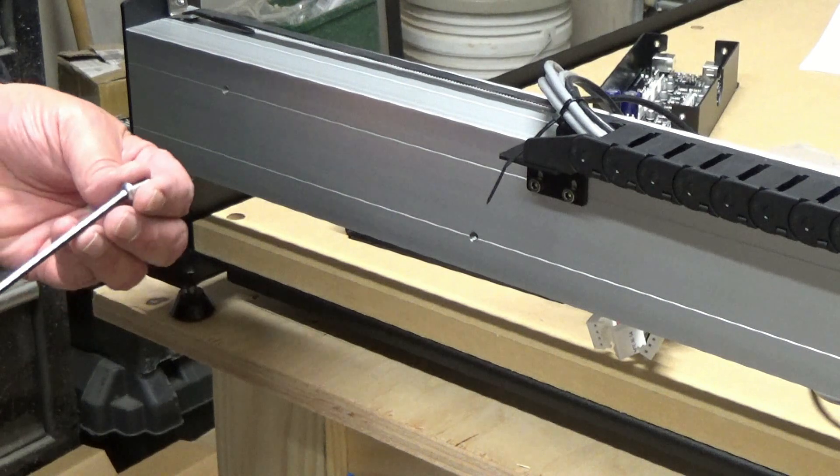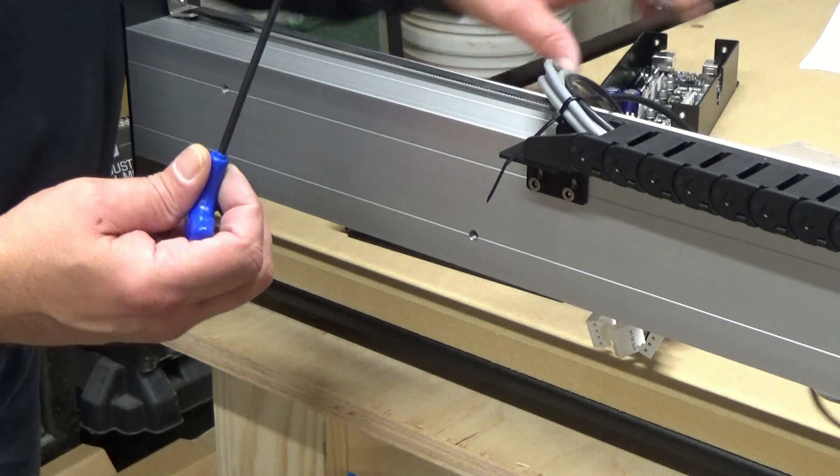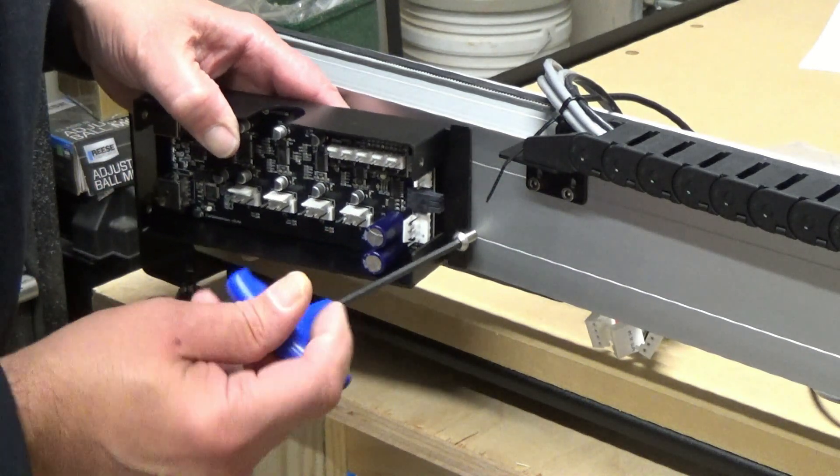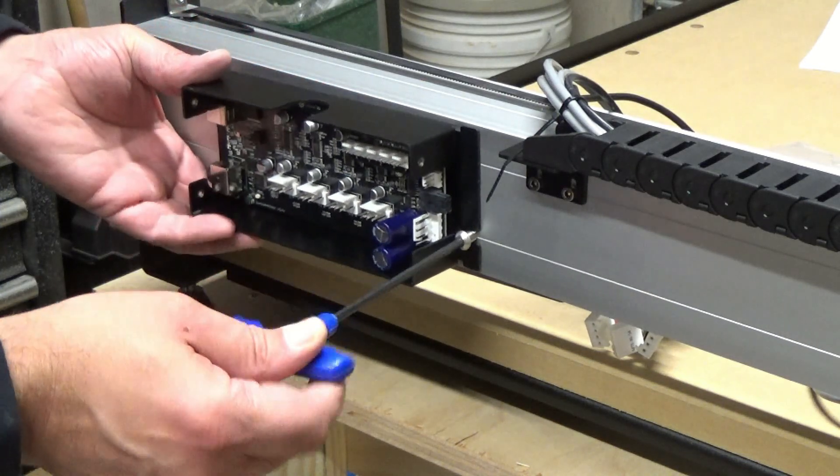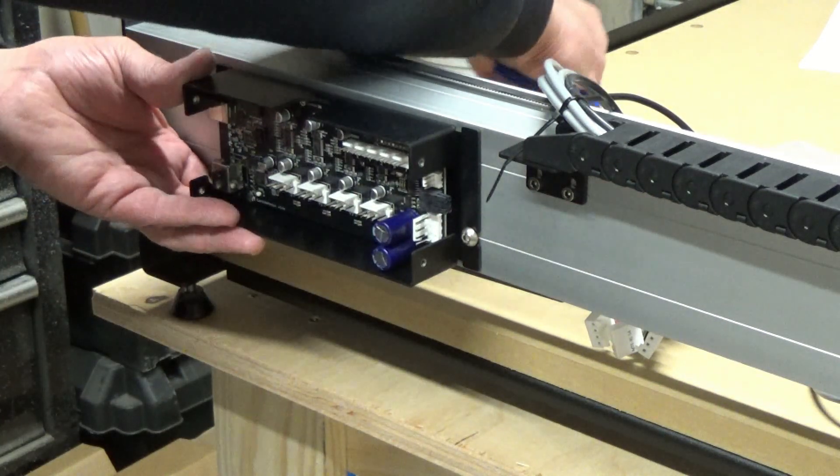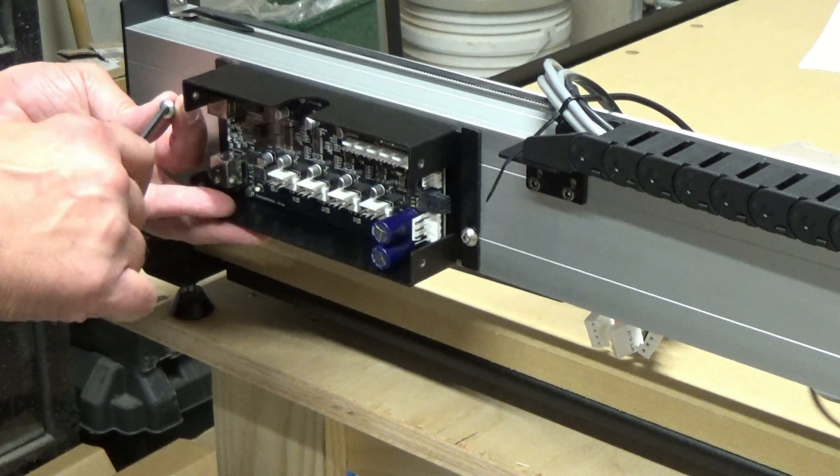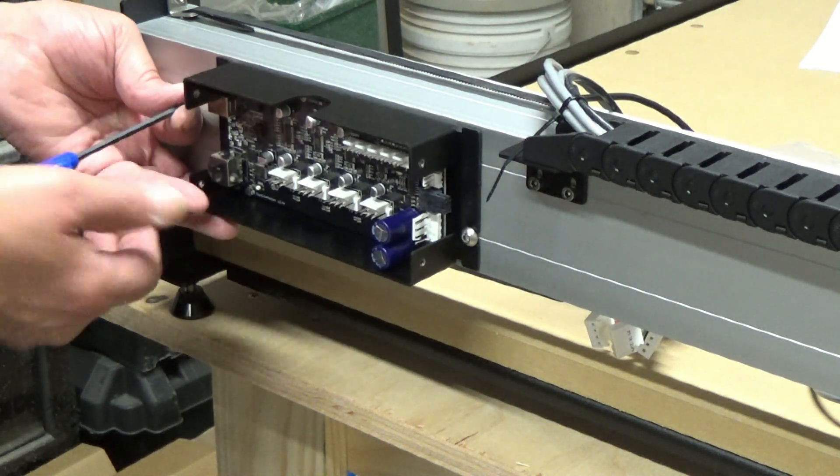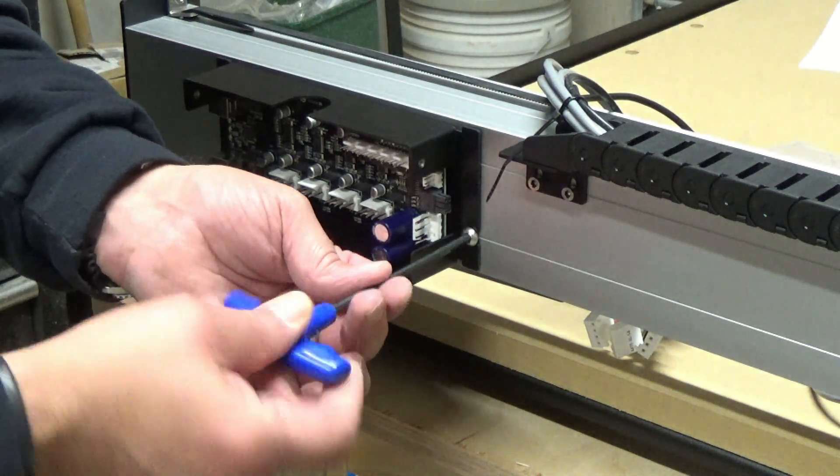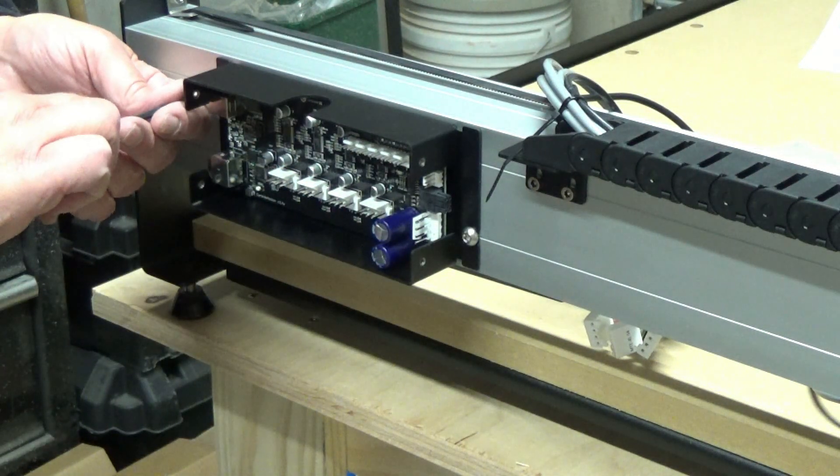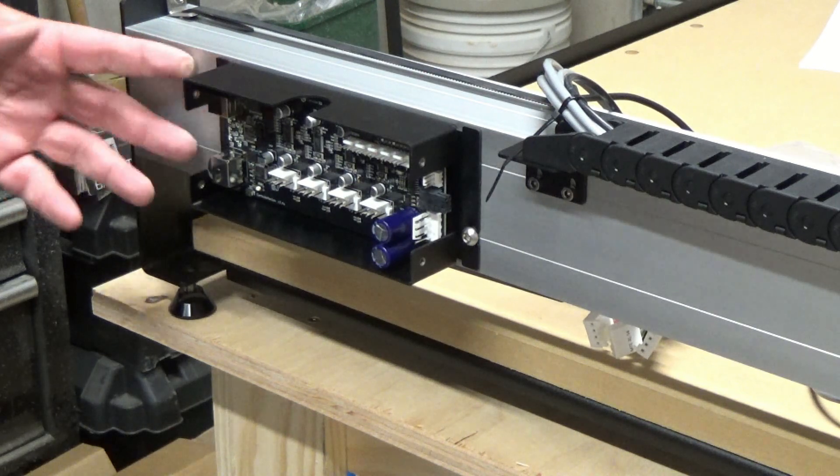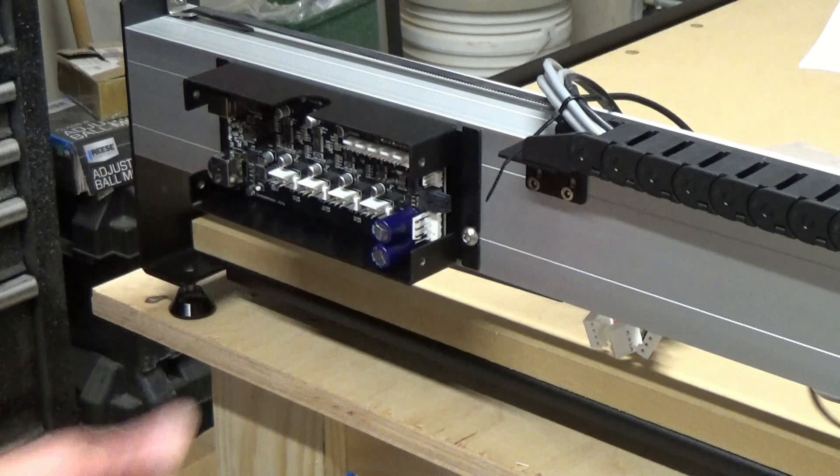So to mount the control board we have these button head screws that was in the package using a four millimeter. We are going to go ahead and connect that right here. And one on this side. And you want to make sure that you have the power and the USB connection on the back side here. So that's connected. Now we can start connecting our wires.